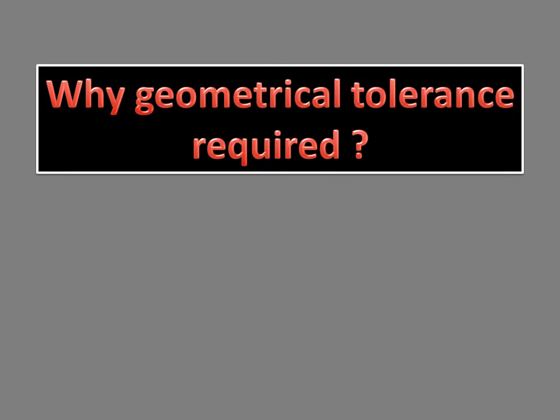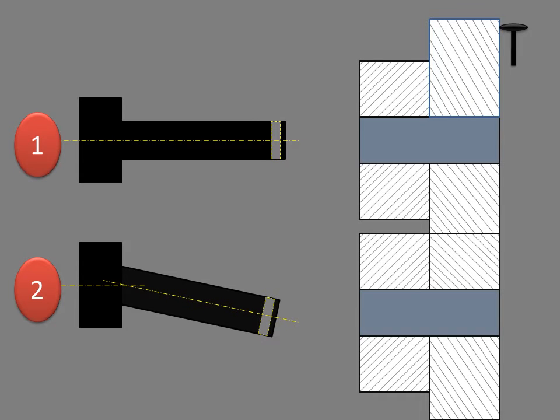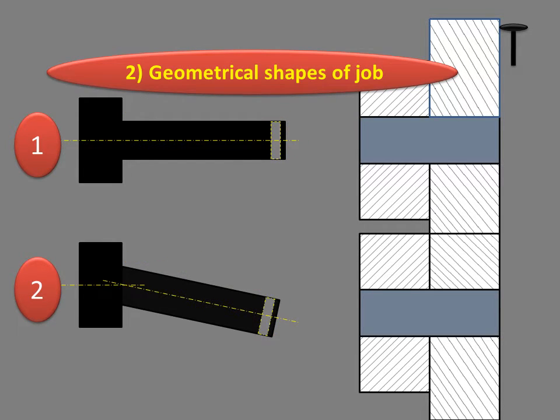Hello friends, today we will learn why geometrical tolerance is required and its definition. Now observe the dimensions of the job in case one and case two. The diameter and length of the bolt are equal.